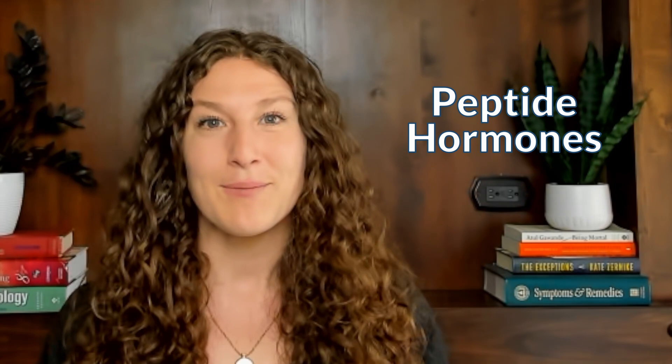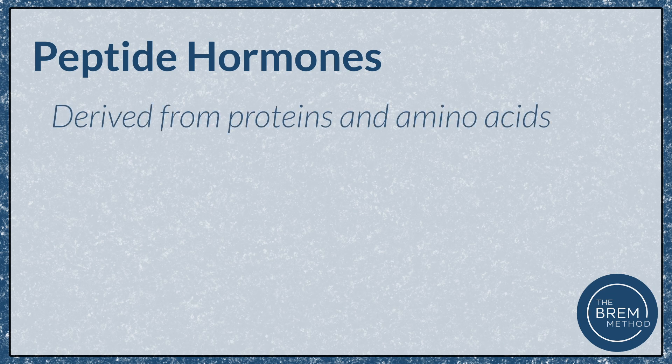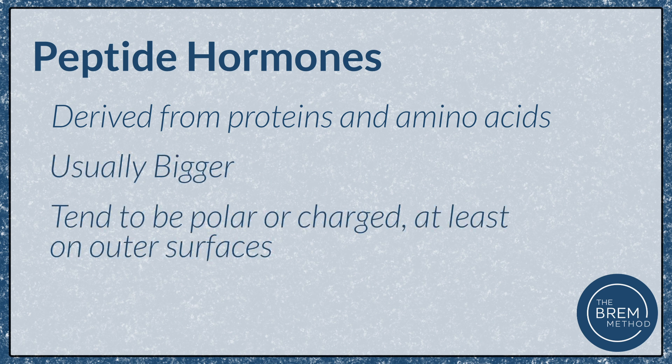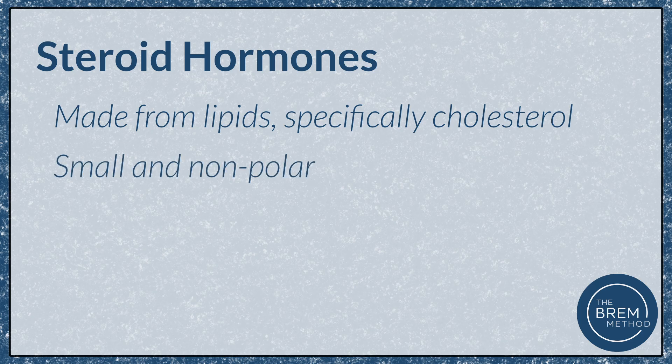Let's start with hormones, which are the chemical signals that allow us to respond to our environment. There are two major types of hormones that you'll see on the MCAT, peptide hormones and steroid hormones. Peptide hormones are derived from proteins and amino acids, and they're usually bigger and tend to be polar or charged, at least on the outer surfaces. Steroid hormones, by contrast, are made from lipids, specifically cholesterol, and they're very small and nonpolar.